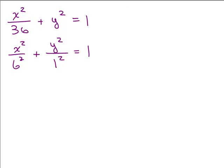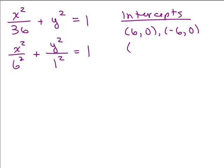So what are our intercepts going to be for this ellipse? We've got under the x there's a 6 squared, so it's 6, 0 and negative 6, 0. And under the y we've got a 1, so that's 0, 1 and 0, negative 1. And so now we want to graph that.